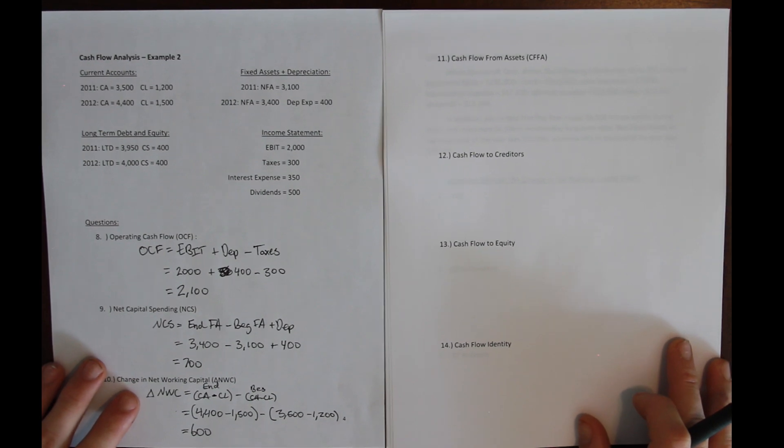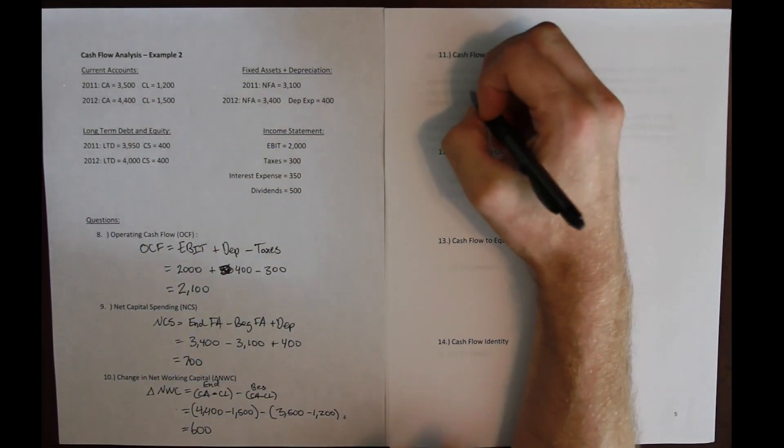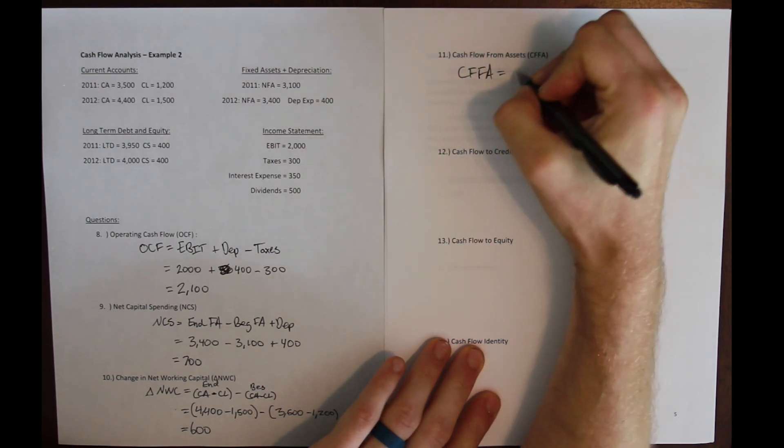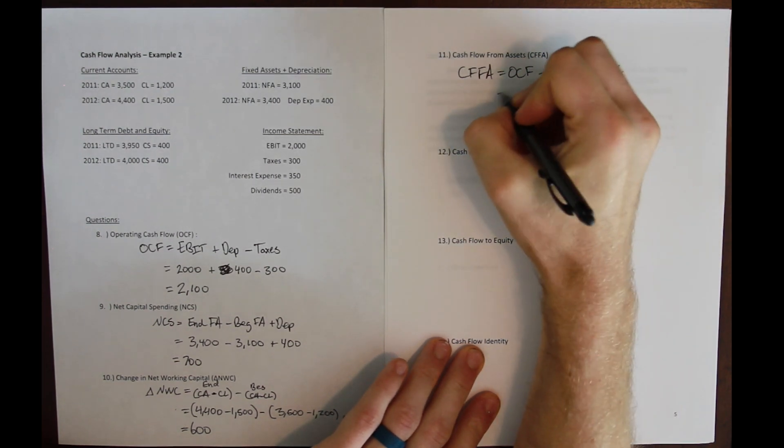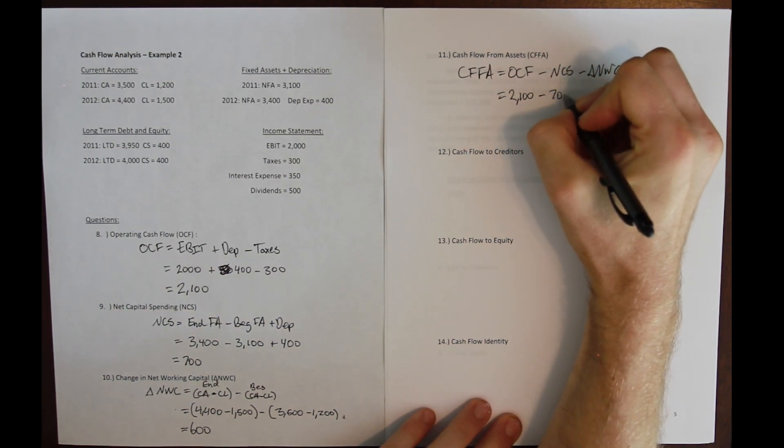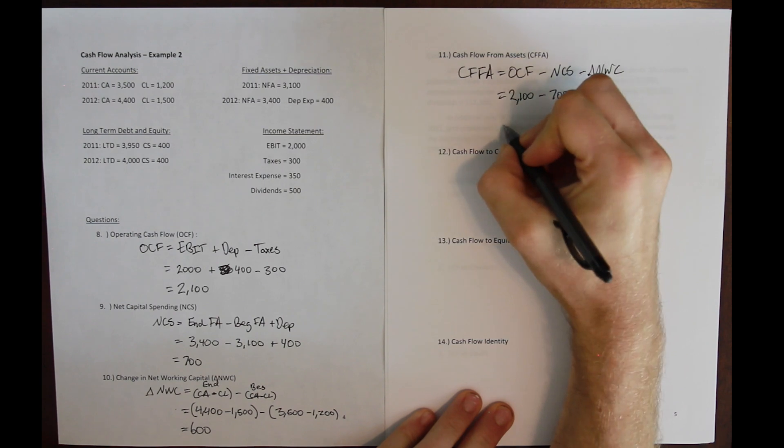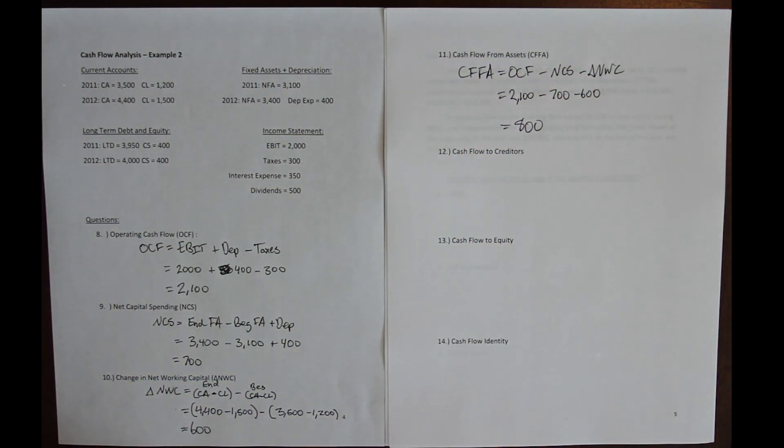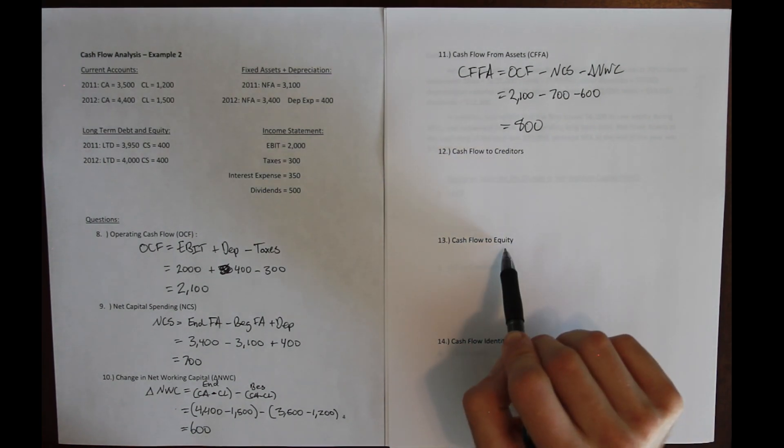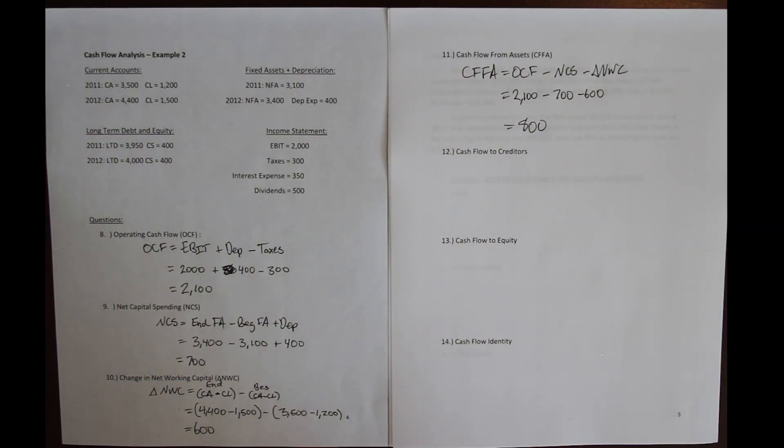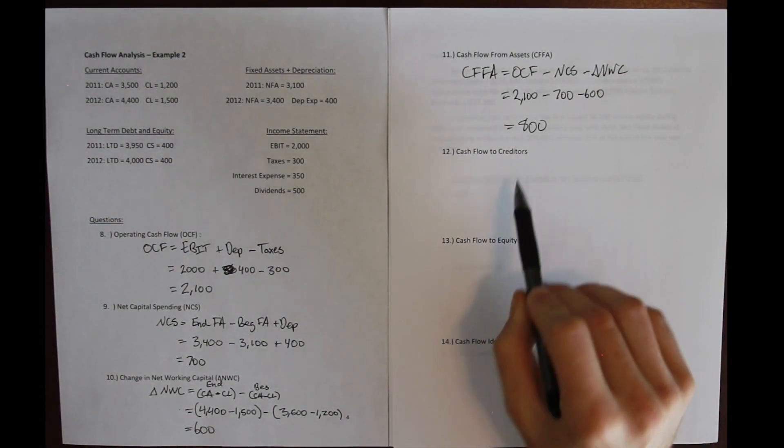So we have some money left over. That's going to be our cash flows from assets. We can calculate it directly: cash flows from assets is operating cash flow minus net capital spending minus the change in net working capital. That's going to be 2100 minus 700 minus 600, and that means we have 800 in cash remaining after we've made all our investments, paid all our expenses. There's still some cash left over. That cash has to be paid back or distributed, either paid back to the people who made us loans or distributed to the owners of the firm.